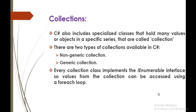Keep in mind there are two types of collections in C#: non-generic collection and generic collection. Every collection class implements the IEnumerable interface, so values from the collection can be accessed using a for-each loop. This applies to both generic and non-generic collection classes.